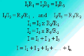Therefore, I1 equals I2 times R2 divided by R1, and I2 equals I3 times R3 divided by R2. The total current IT is equal to I1 plus I2 plus I3, and for any number of resistors in parallel, the total current is equal to I1 plus I2 plus I3 up to IN.